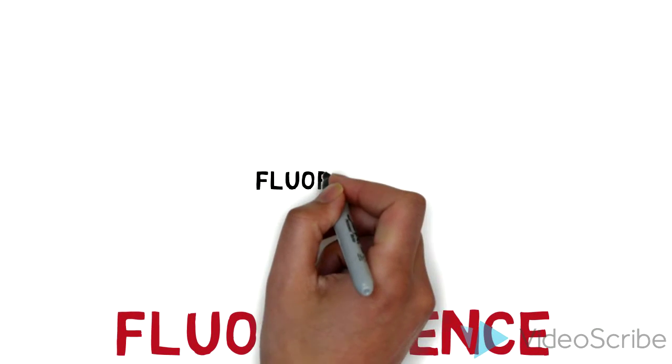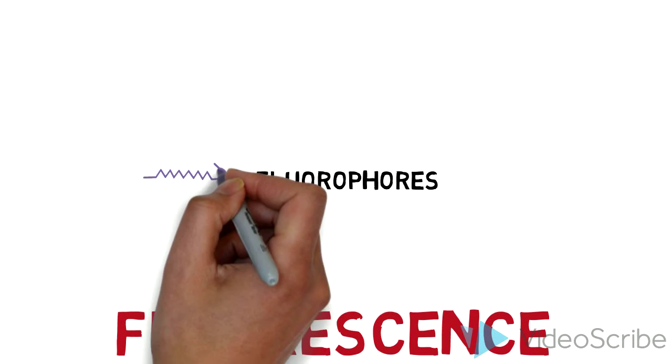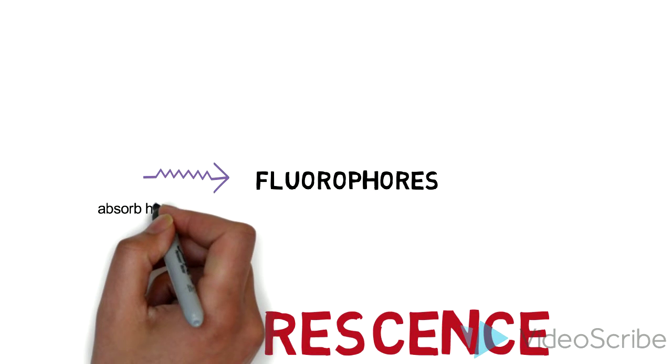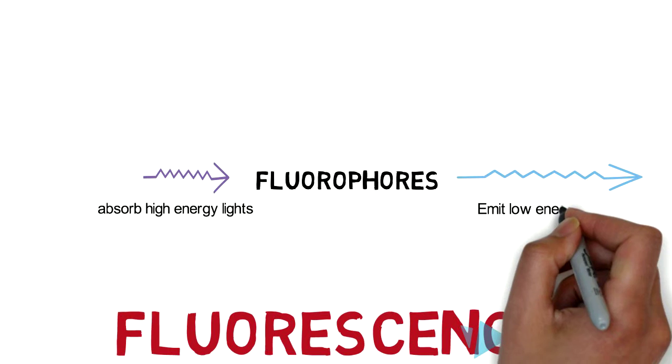Everything starts with substances called fluorophores. These substances can absorb short wavelength light with high energy, and its electrons can jump to excited states. When these electrons go back to the ground state, it emits long wavelength lights with lower energy.